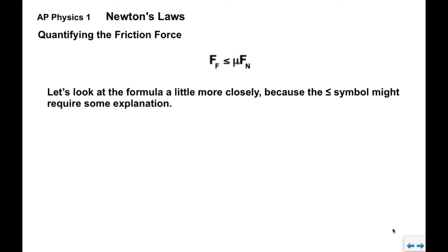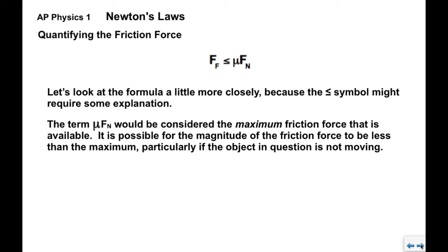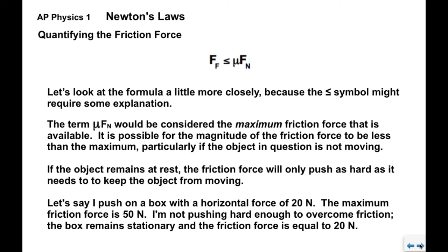Now, we want to look at this formula a little more closely because the less than or equal to symbol probably requires a little bit of explanation. On the right side, mu times FN. This would indicate the maximum friction force that's available given an FN and a mu in the surface. The friction force can't be more than that. It can be less, though, particularly if the object in question is not moving. So if the object remains at rest, the friction force will only push as hard as it needs to in order to keep the object from moving. We will demonstrate this in class.